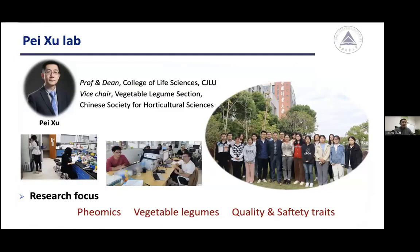Please allow me to introduce myself and my team. My name is Pei Xu. I'm currently professor and dean at the College of Life Sciences at China Jiliang University, located in Hangzhou city, very close to Shanghai. I'm also serving as vice chair of the vegetable legume section of the Chinese Society for Horticultural Sciences. I just moved to this university three years ago, so my team is very young. Research in my lab focuses on plant phenomics, vegetable legumes including common beans, cowpeas, and garden peas, and improvement for quality and safety traits of these important vegetable legumes.